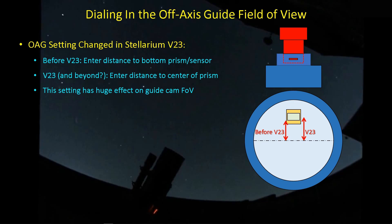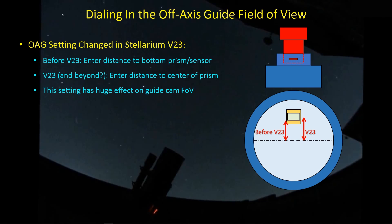Prior to version 23, what Stellarium had us do was to find the bottom edge of the sensor, if the sensor is smaller than the size of the prism, or the bottom edge of the prism if the sensor size is larger than the prism, and we'd put that in as the prism CCD distance. With version 23, they've changed that — they're now measuring from the center of the optical view, right down the center line of the telescope, up to the center of the prism. That's actually a better way to do it, except we already had a way of doing it that we all understood, so changing something midstream is a bit irritating.